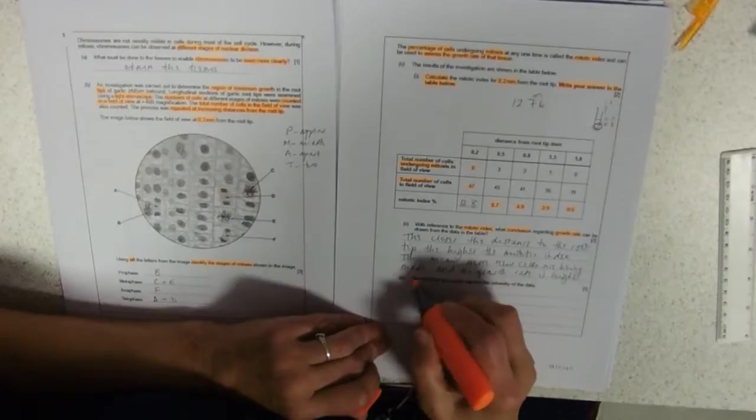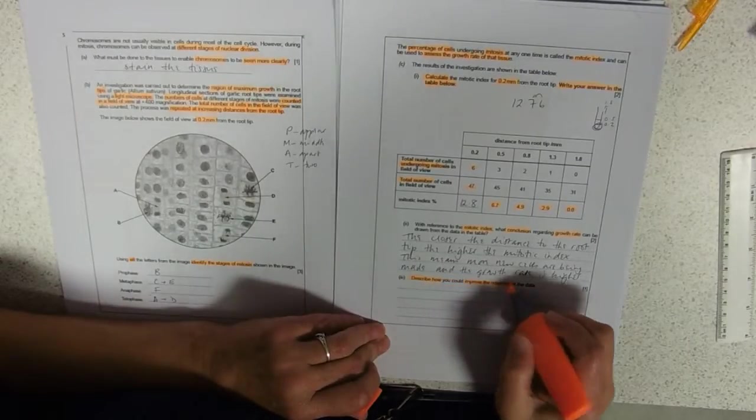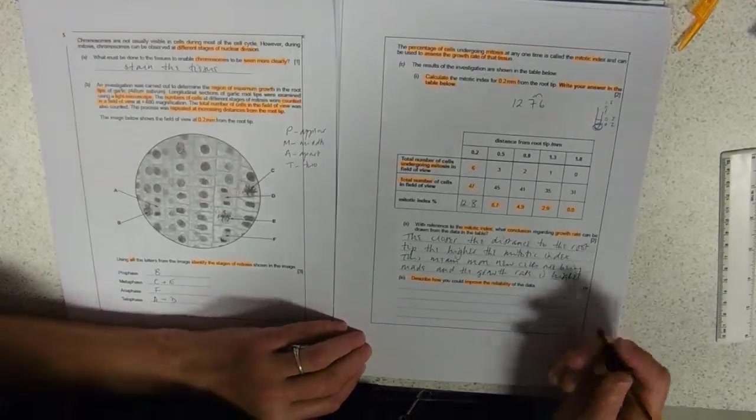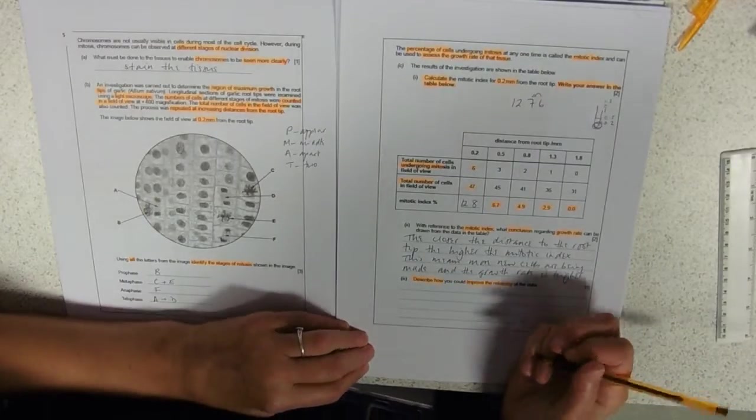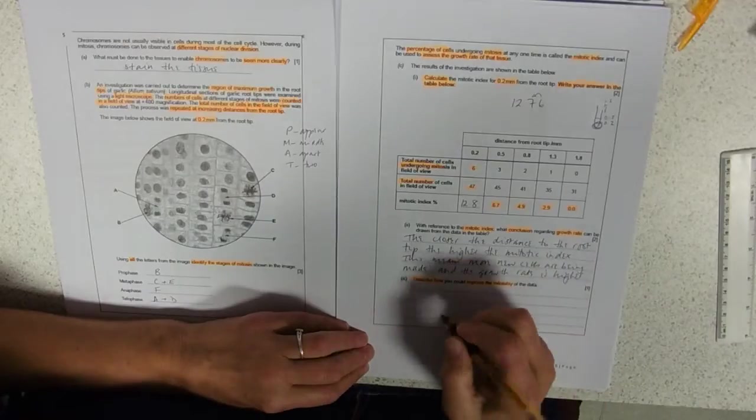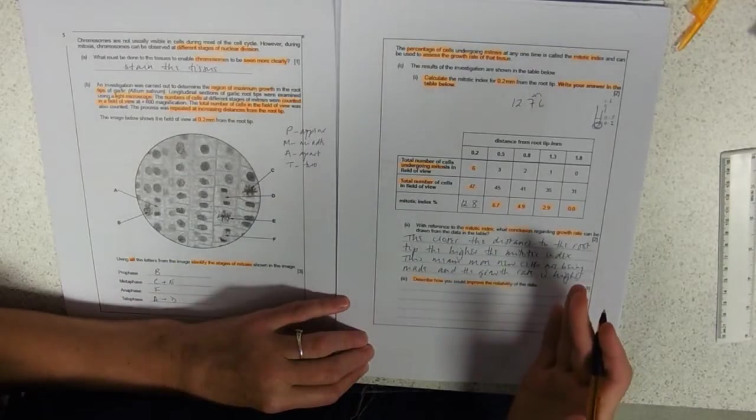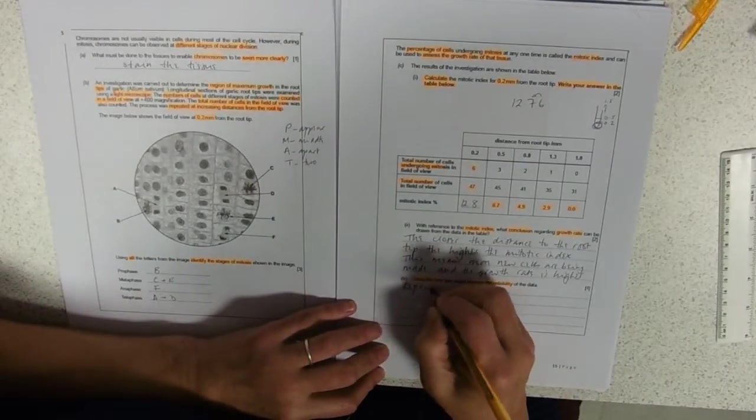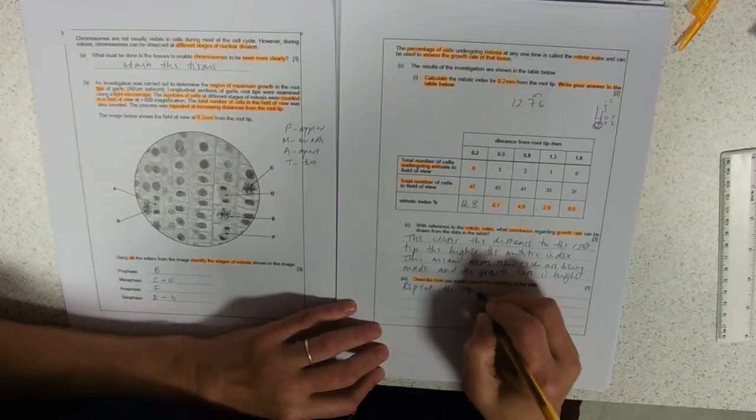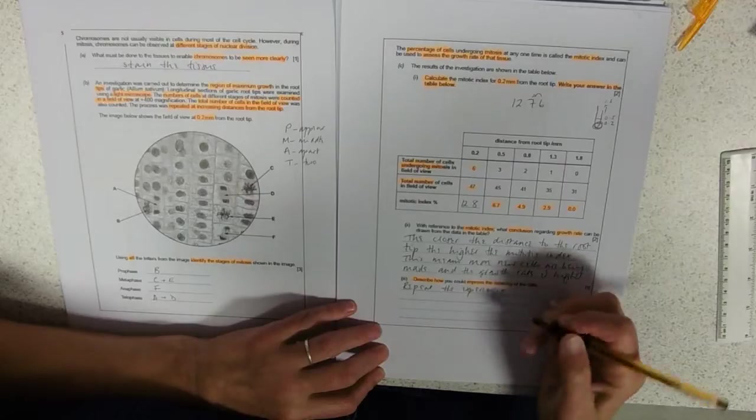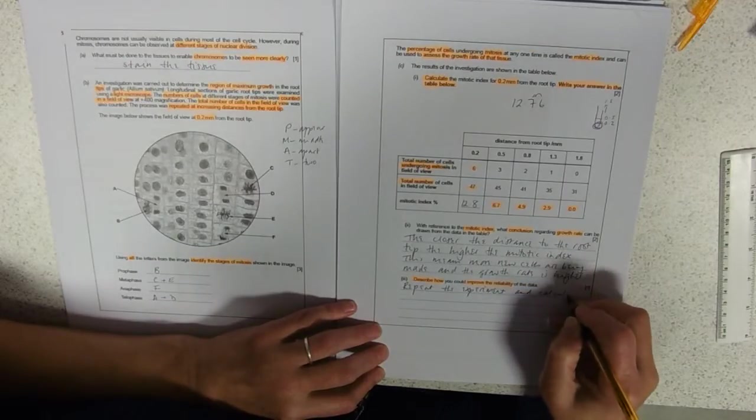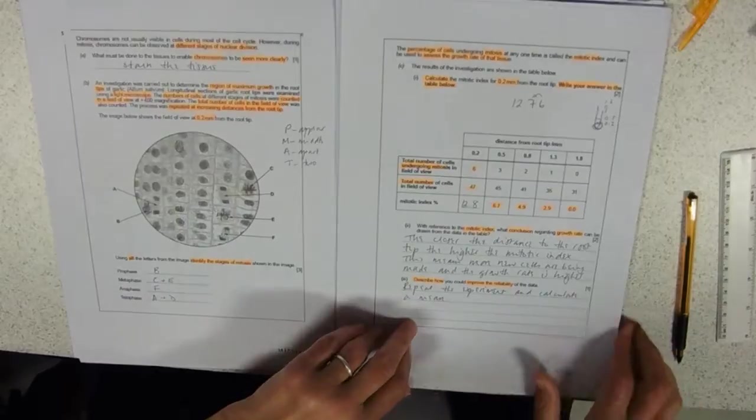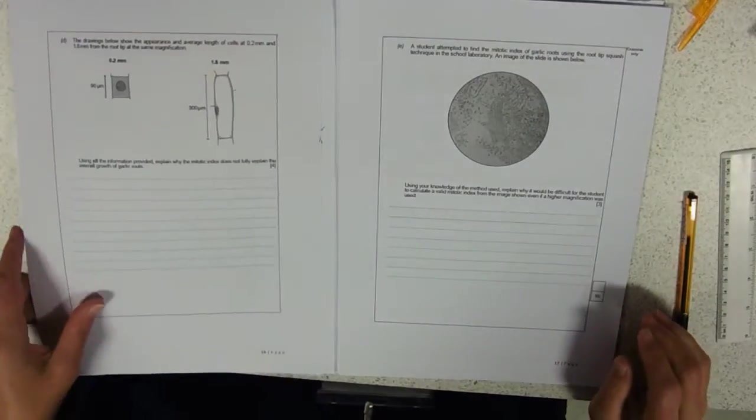Describe how you could improve reliability. This is just a bit of practical here. In the exam, a lot of students wrote about repeating the experiment, but they didn't say then what they were going to do with the data. This is a pretty standard answer. If you're asked how you would improve reliability, you're going to write that you would repeat the experiment and calculate the mean. Easy peasy, one mark.